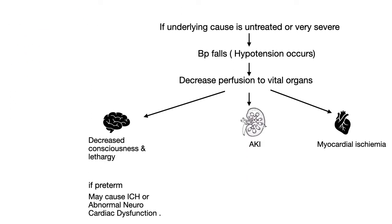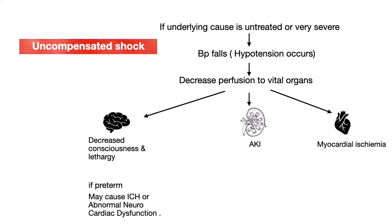If the underlying cause remains untreated or is too severe, compensation fails and BP gradually falls, leading to decreased perfusion to vital organs. In the brain, this leads to decreased consciousness and lethargy; in preterm neonates it may cause intracranial hemorrhage, or in ELBW neonates, abnormal neurocardiac dysfunction. In the kidney, it may lead to complete shutdown; in the heart, it may cause ischemia causing further damage. This stage is called uncompensated shock.